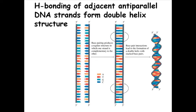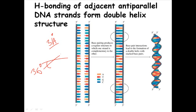For hydrogen bonding between adjacent antiparallel DNA strands to be favorable, the base pairs must be placed very close together — less than 3 angstroms apart. If the gap exceeds 3 angstroms, water molecules can enter and disrupt the hydrogen bonds. Additionally, the DNA sequence must be arranged so that each successive base plane is rotated by 36 degrees relative to the previous one.